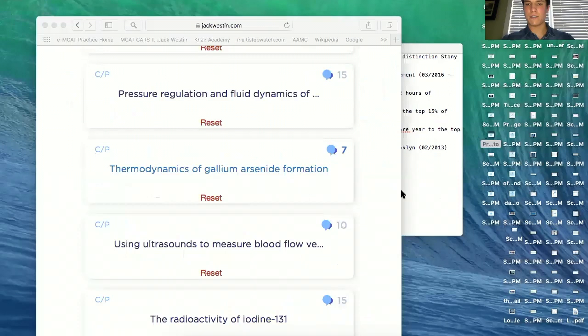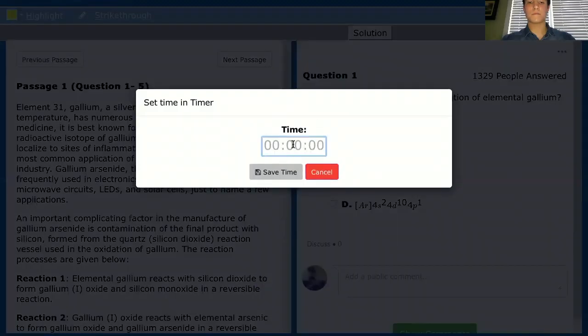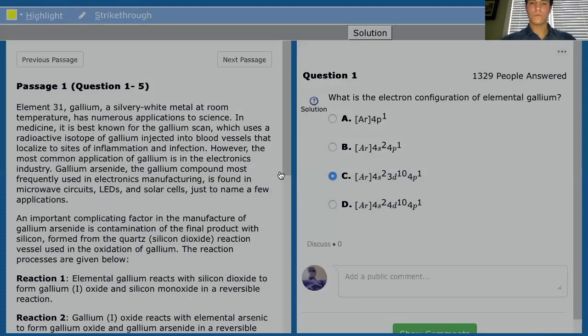What you'll want to do now is put the timer on, and we basically just put 23. Okay, so 0 0 23, and then 45, and we'll save that.